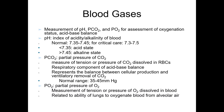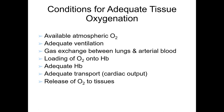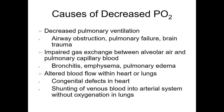The partial pressure of oxygen, pO2, is the measurement of tension or pressure of oxygen dissolved in the blood, related to the ability of the lungs to oxygenate blood from alveolar air. Conditions for adequate tissue oxygenation include available atmospheric oxygen, adequate ventilation, gas exchange between the lungs and arterial blood, loading of oxygen into hemoglobin, adequate hemoglobin, adequate cardiac output, and release of oxygen to the tissues. Causes of decreased pO2 include decreased pulmonary ventilation such as airway obstruction, pulmonary failure, or brain trauma; impaired gas exchange as in bronchitis, emphysema, or pulmonary edema; and altered blood flow such as congenital heart defects or shunting of venous blood into the arterial system without oxygenation.